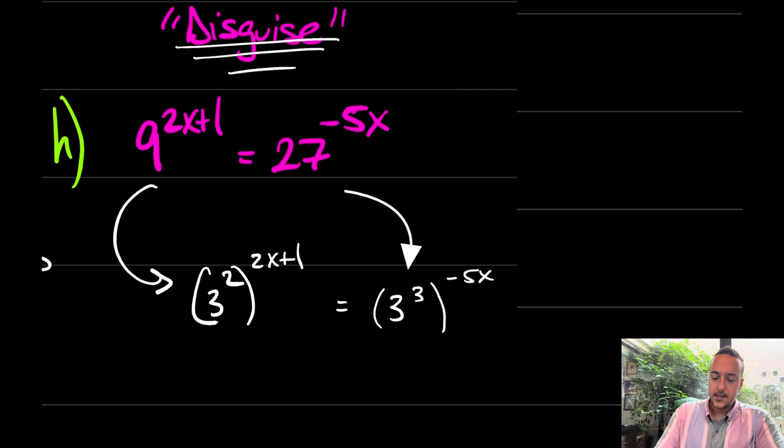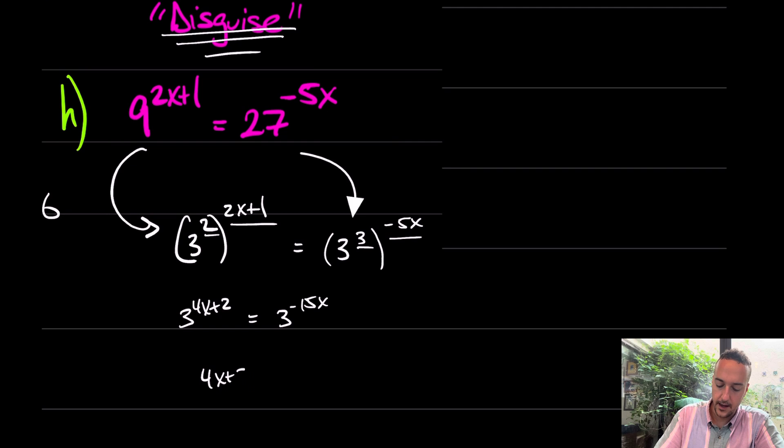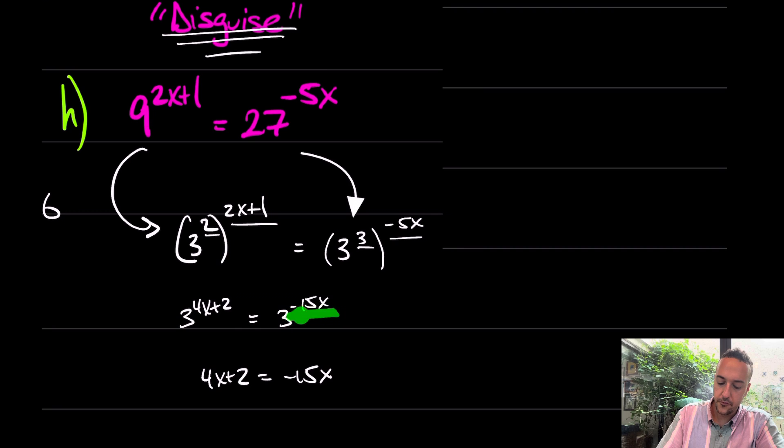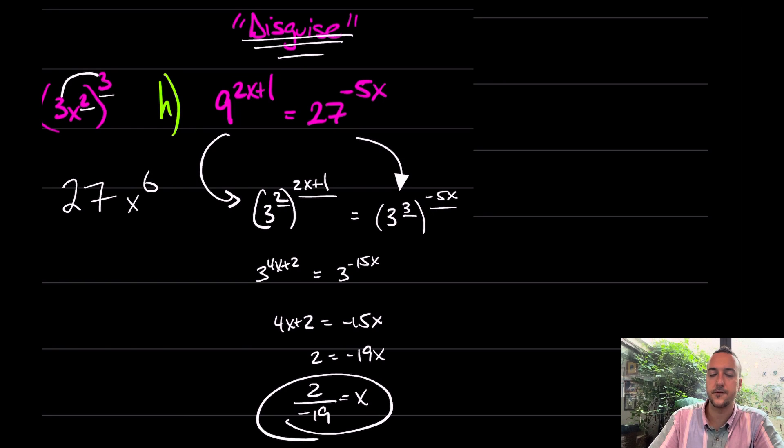And at that point, you can understand that now, because they have the same base, power of a power will multiply three to the four x plus two equals power of a power three to the negative 15x. Thus, we're almost done. We have four x plus two equal to negative 15x. Three to the this equals three to the that. Essentially, you can just set these two equal to each other. From there, when you do the math, you should find that this will be two equals negative 19x. And then over here, we have x equals two over negative 19. That is your answer for that question.